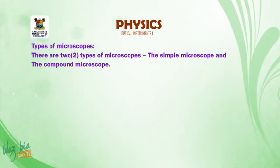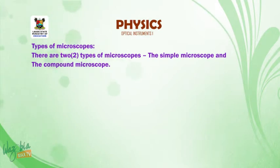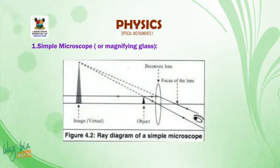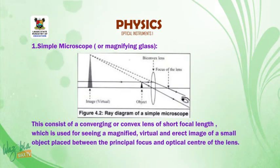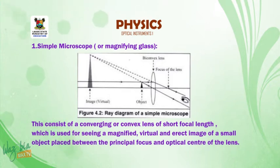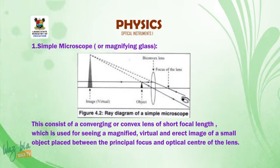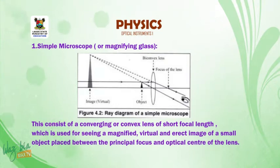There are two types of microscopes: the simple microscope and the compound microscope. The simple microscope, or the magnifying glass, consists of a converging or convex lens of short focal length, which is used for seeing a magnified, virtual, and erect image of a small object placed between the principal focus and the optic center of the lens.